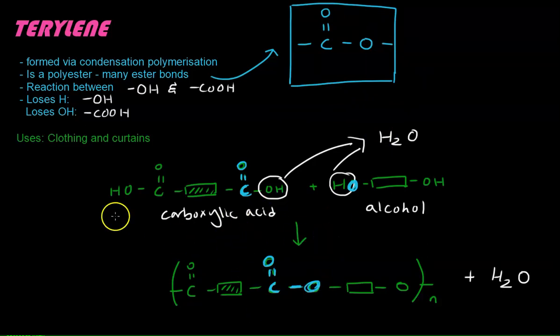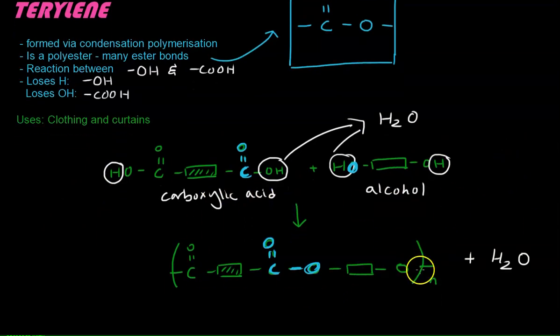And this is called a polyester because this portion can also bond with another alcohol. This portion can also bond with another carboxylic acid. So it alternates: alcohol, carboxylic acid, alcohol, carboxylic acid. And with this, you can form N number of ester bonds. So it's N here. So it's very important to draw this bracket N with an N. And this thing should protrude out.